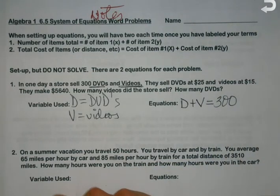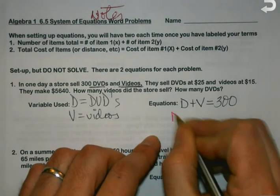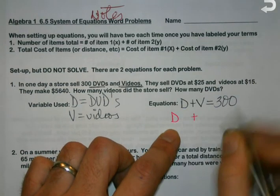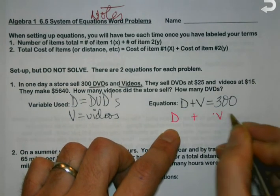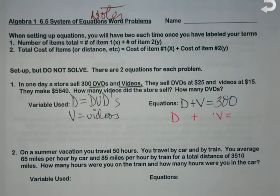I've got 300. So my first equation is always just add the two things together, set them equal to how many there are. Nothing too bad.